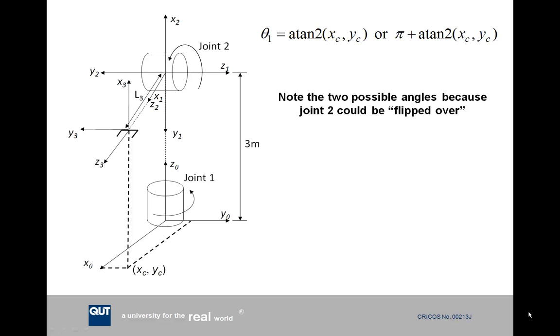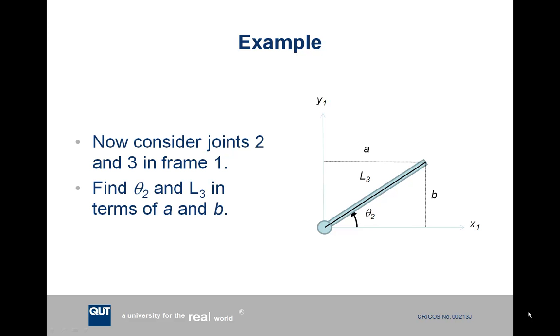So the first part, finding out what theta one is, is quite similar to what we did with the 2D examples. So we take the tool point and we project down the XC and YC components into the X0, Y0 plane, and then we can see that the calculation for theta one is simply atan2 of XC, YC, or pi plus atan2 XC, YC. The reason we have two answers is because joint two could be in the normal configuration, like it's shown in this picture, or joint one could be rotated 180 degrees around, and joint two could flip 180 degrees over to be in the flipped over configuration. This is just like the previous example earlier in the lecture. So important to note there are two possible answers in this case.